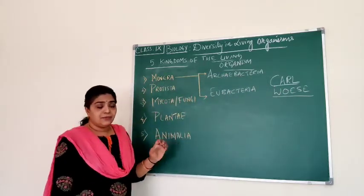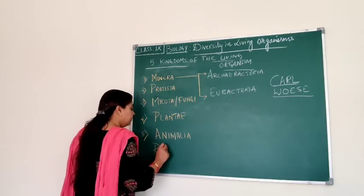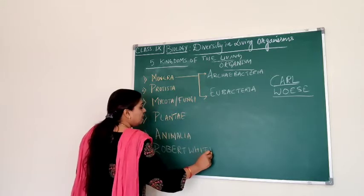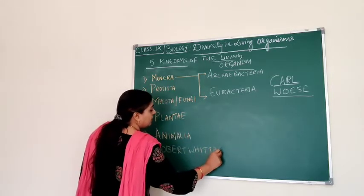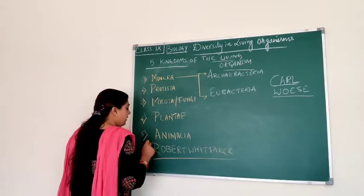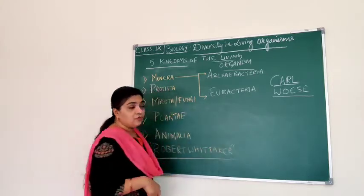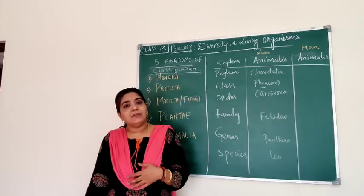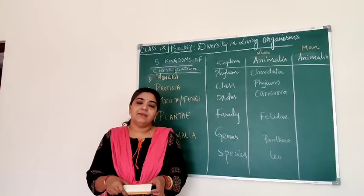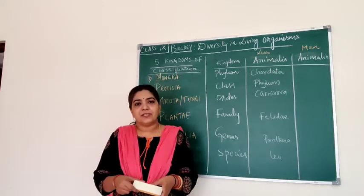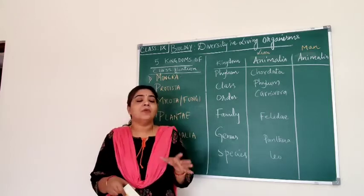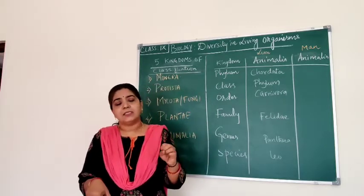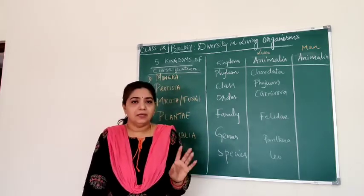The five kingdom classification is given by Robert Whittaker. Now, how do we put these organisms in different kingdoms? In the living world, we classify living things based on whether they possess a cell. When anything has a cell, we put it in the living world, and then we identify which kingdom it belongs to.